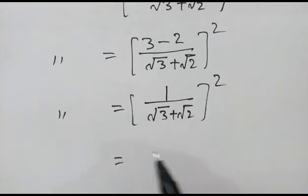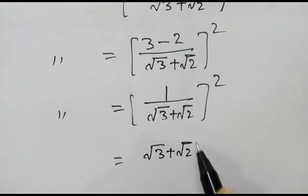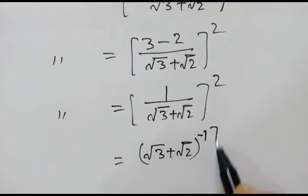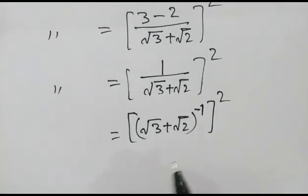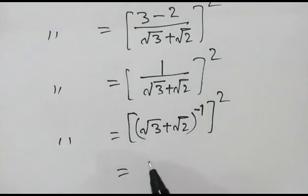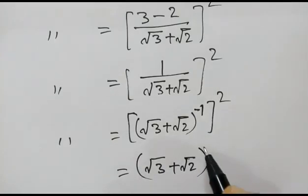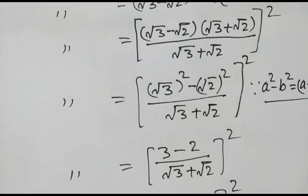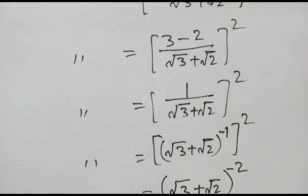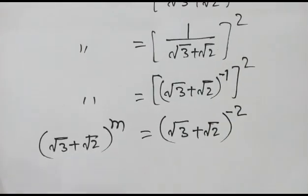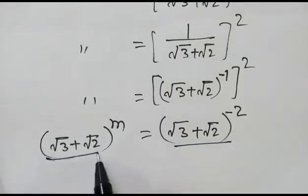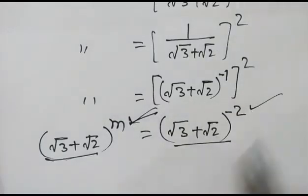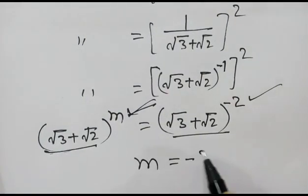Now we can write this as square root of 3 plus square root of 2 inverse, whole squared, which becomes square root of 3 plus square root of 2 to the power minus 2. Comparing both sides, m is equal to minus 2.